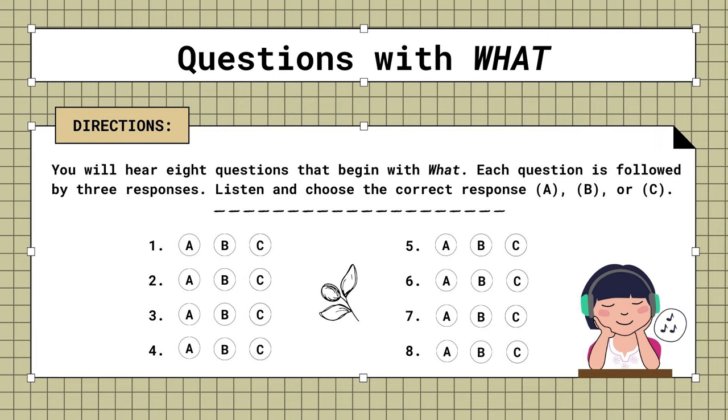Mini-test. Questions with what? You will hear eight questions that begin with what. Each question is followed by three responses. Listen and choose the correct response. A, B, or C.